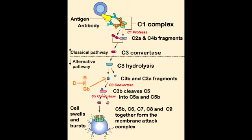This C3 convertase will cleave more C3, which is abundant in your plasma, leading to the formation of more C3a — again, an anaphylatoxin — and more C3b. The newly formed C3b will go back and combine with the C3 convertase, giving you C5 convertase, which is made up of C3b, Factor Bb, and another C3b.